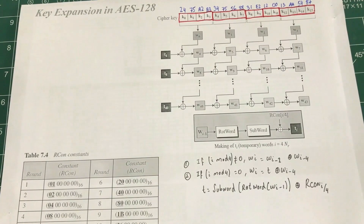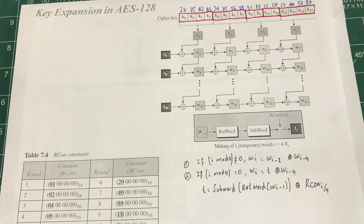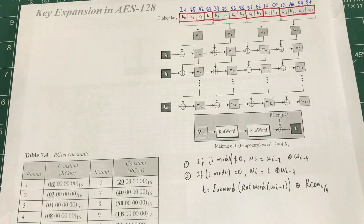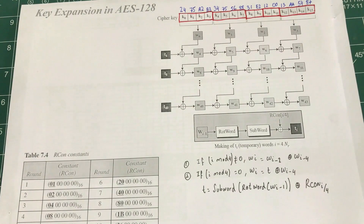We have done SubBytes — not using the tables but using mathematical calculation. We have done MixColumn, which also requires some mathematical calculations. In the middle we have ShiftRow, which we don't need to worry about because it's not mathematically intensive — you normally just shift one byte. One of the things that fascinates me is the key expansion algorithm for AES.